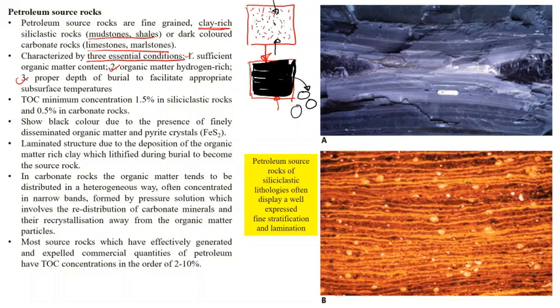The TOC — total organic content or total organic carbon — for siliciclastic rocks, for petroleum generation, the TOC should be at least 1.5%. There should be at least 1.5% TOC for siliciclastic rocks such as shales. For carbonate rocks, it should be a minimum of 0.5%. Only then will petroleum get generated.